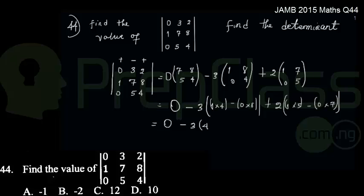This gives me 0 minus 3 into brackets, 1 times 4 gives 4, 0 times 8 gives 0 so I'll have 4, plus 2 into bracket, 1 times 5 gives 5, 0 times 7 gives 0. I have 0 minus 3 into bracket 4, plus 2 into bracket 5. That becomes 0 minus 12 plus 10. Rearranging, this becomes 10 minus 12, which equals minus 2. Scanning through the options, that corresponds with option B.